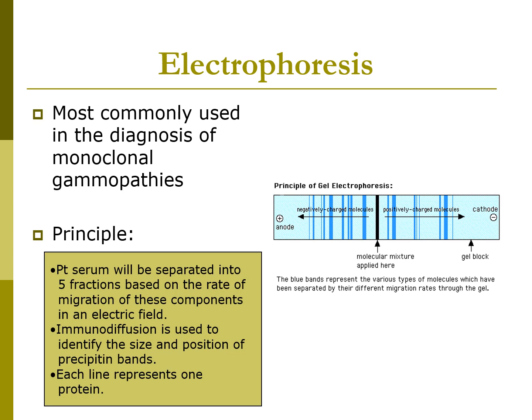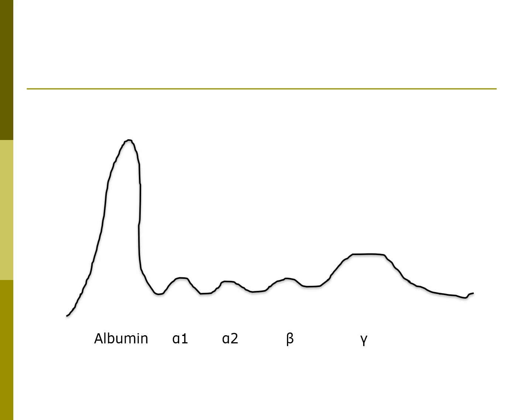Labs can detect monoclonal and polyclonal gammopathies with serum protein electrophoresis. Using different charges, serum proteins are separated into bands. Electrophoresis is the most commonly used test to diagnose monoclonal gammopathies. In the electrophoretic pattern: the first band is albumin; the alpha-1 region contains alpha-1 antitrypsin; alpha-2 contains C4 complement; the beta region contains C3 complement; and the gamma region contains all immunoglobulins and CRP. Monoclonal or polyclonal gammopathies will be visible in the gamma portion of the pattern.